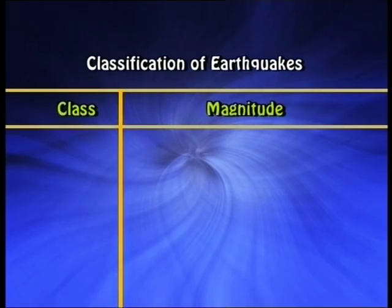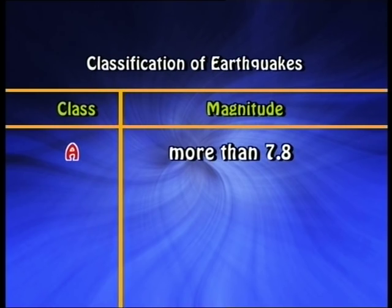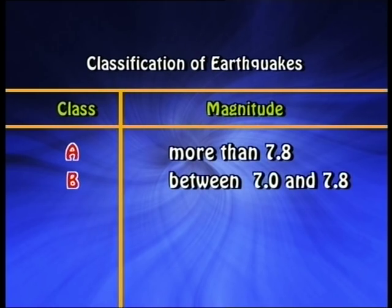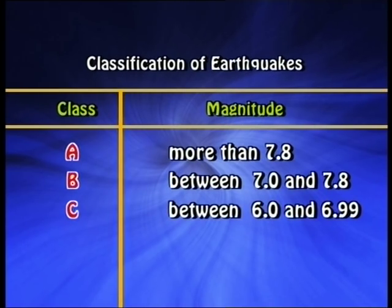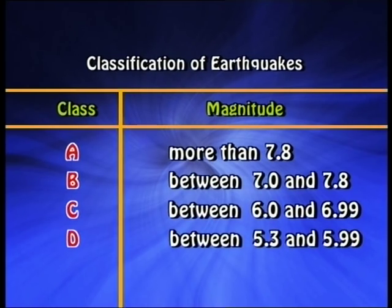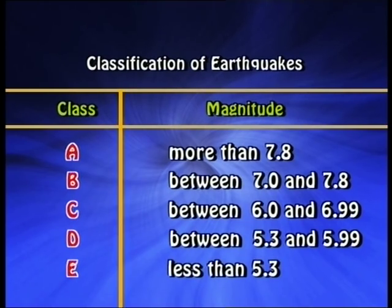Earthquake magnitude is the quantitative measurement of total energy released during an earthquake at its source. On the basis of magnitude, earthquakes are grouped into five classes: Class A, more than 7.8 magnitude; Class B, between 7 and 7.8; Class C, between 6 and 6.99; Class D, between 5.3 and 5.99; and Class E, magnitude less than 5.3.